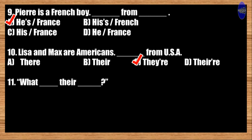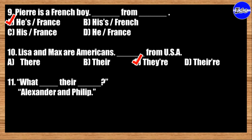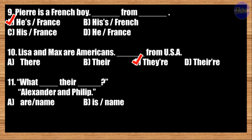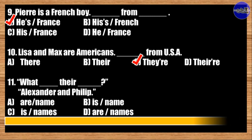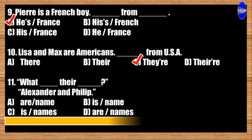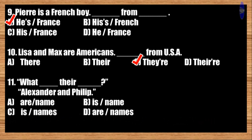Number eleven: What blank their blank? Alexander and Phil. A: their, name; B: his, name; C: his, name; D: their, names. The correct answer is option D. What are their names? Both are their names: Alexander and Philip.